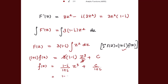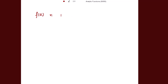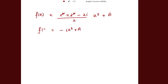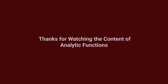On rationalizing, multiplying by (1 minus iota) over (1 minus iota), the denominator gives 1 minus iota squared equals 2. Opening the numerator: 1² plus iota² minus 2 iota over 2, times z³ plus a. Since iota² equals negative 1, those terms cancel, leaving negative iota z³ plus a. That is the required function f(z) in terms of z. Thank you.